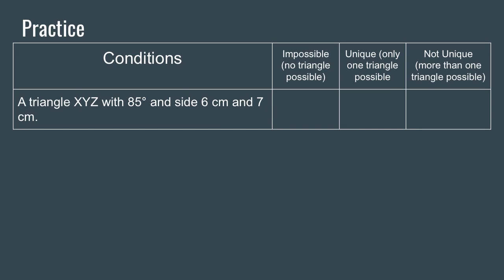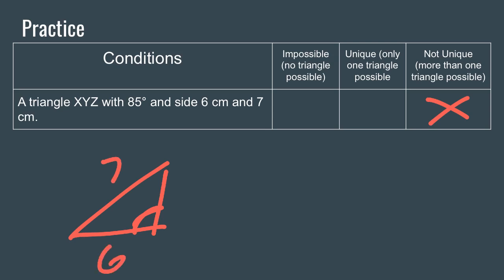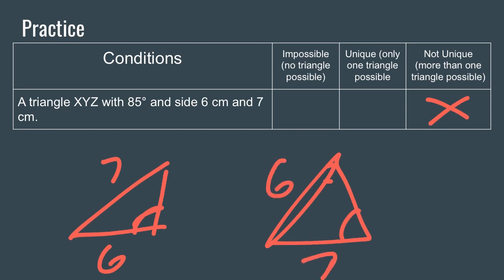Let's practice. Triangle XYZ with an 85-degree angle and sides of 6 and 7 centimeters — is it impossible, unique, or not unique? It's possible, so not impossible. They don't give us a specific arrangement, so it's not unique. You could have the 85 in different positions relative to the 6 and the 7, clearly resulting in more than one triangle — not a unique situation.